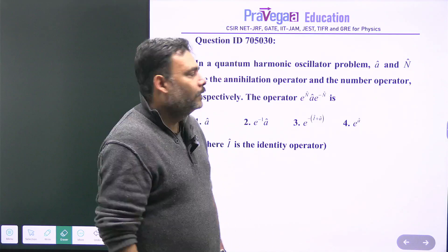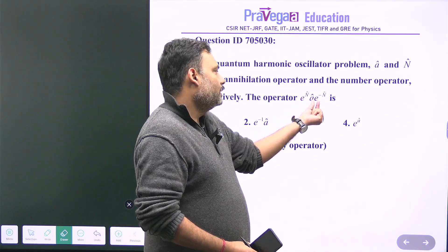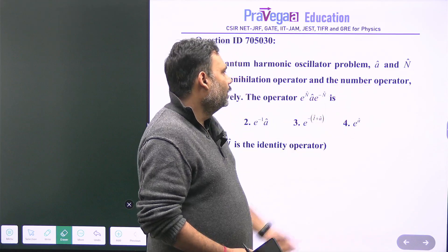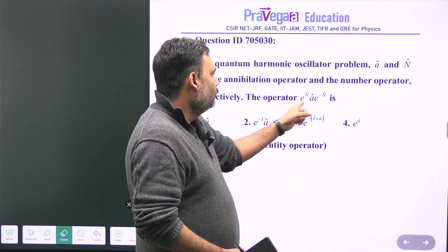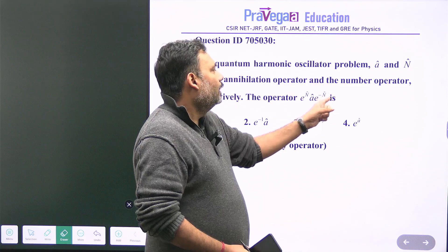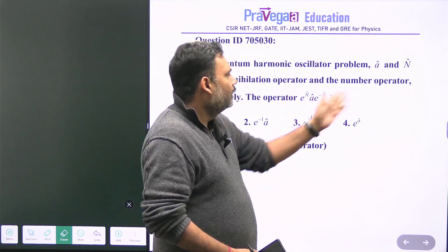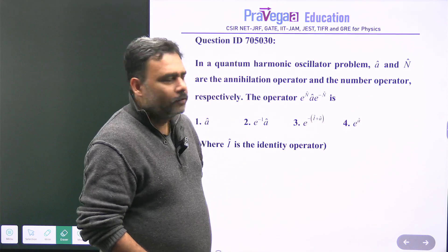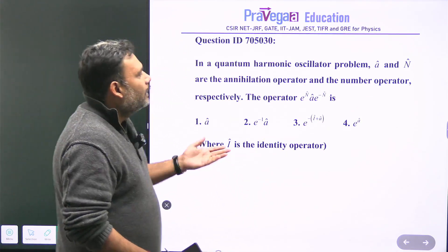You can solve this problem in different ways. One way is to do the Taylor expansion of e to the power N and e to the power minus N, apply them, and see what the equivalent expression is. Another way is to directly use the basic formula of operators.